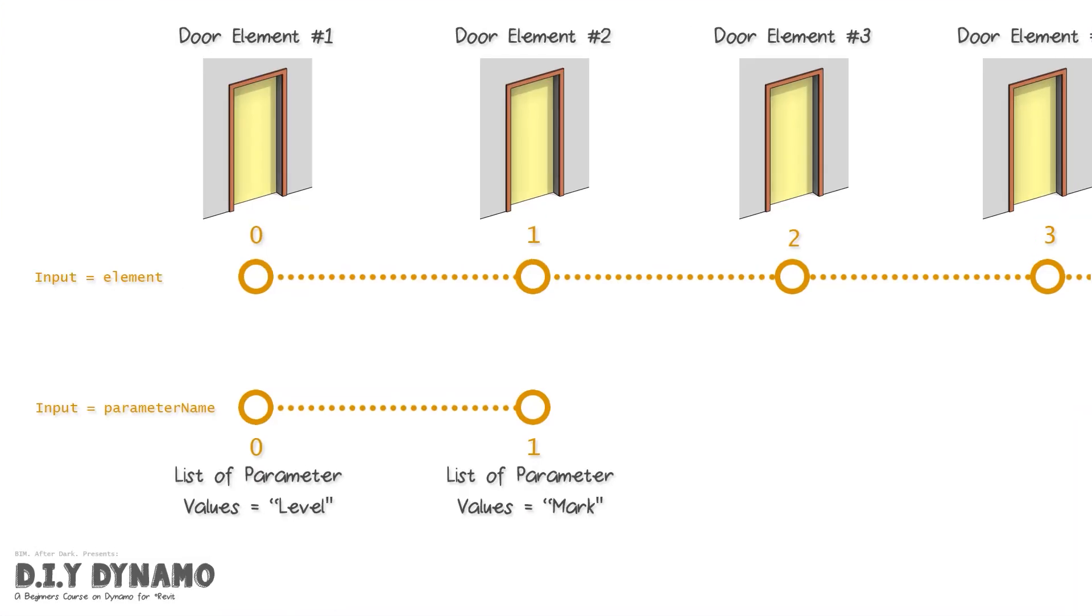When thinking about combining two lists and multiple pieces of data in Dynamo, I like to use a diagram that's two parallel lines. So imagine our elements, which in this case is our door elements, are one parallel line. So we have door element number one, number two, number three, number four, and so on, all the way up to number 18 in this project. Then we have our parameter names. So you could see we have our list of parameter name values for level and our list of parameter name values for mark. Within each one of those parameter name values is going to be a list.